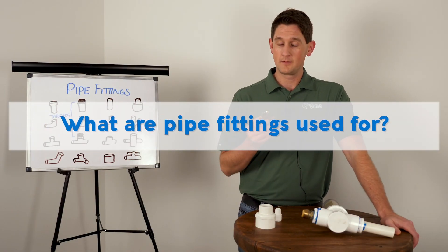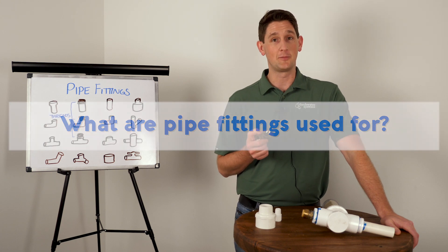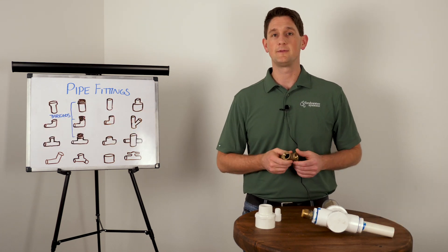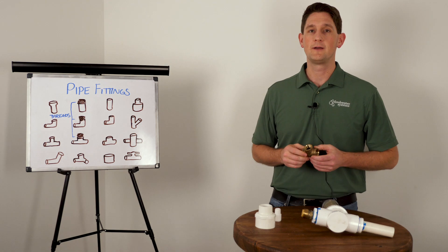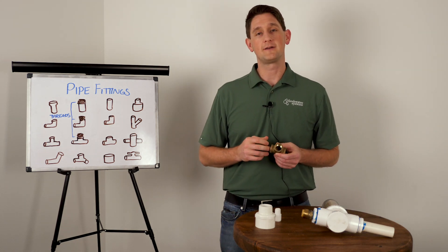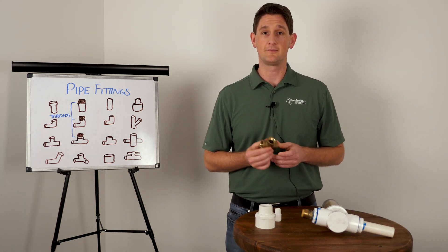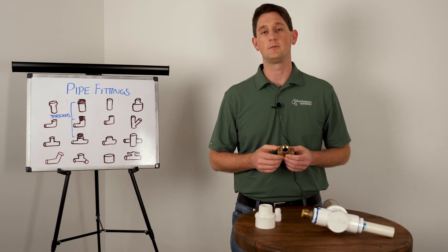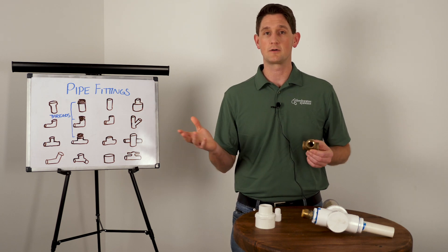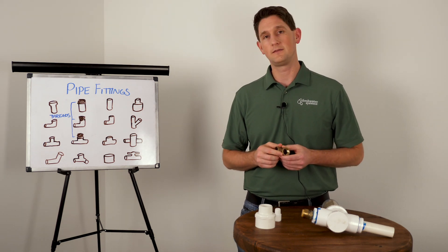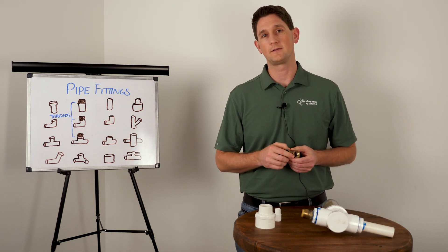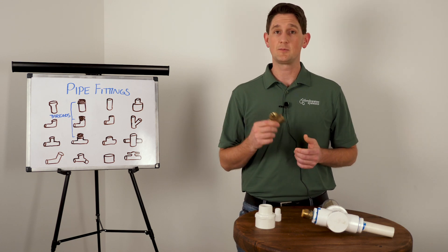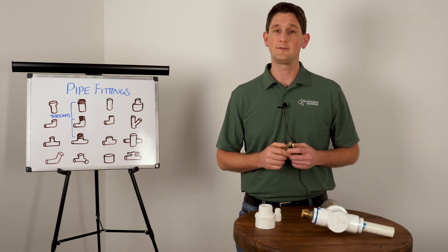What is a pipe fitting used for? Well, basically a pipe fitting is used to join pipe in a plumbing configuration. So if you were to plumb your entire house, you would want to have these little fittings at different parts of your house in order to branch off the water supply or bend the water supply so that it goes around a corner. So that's basically what a pipe fitting is used for.